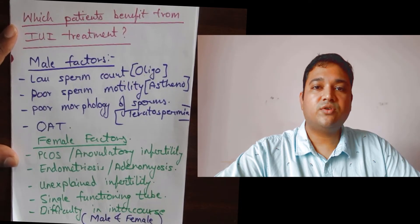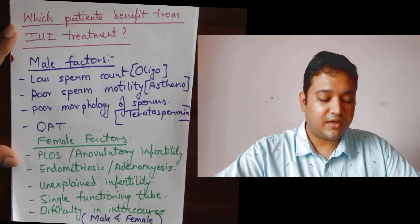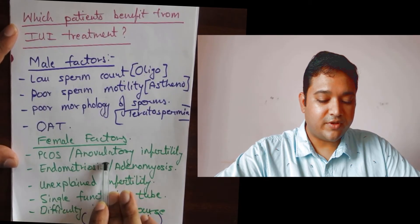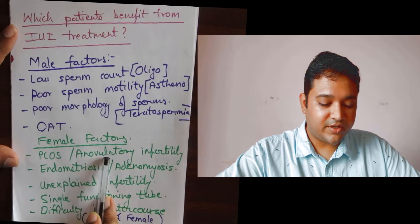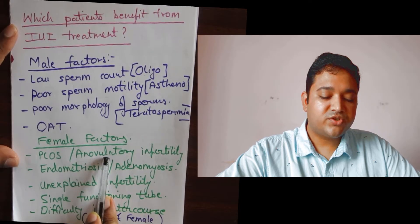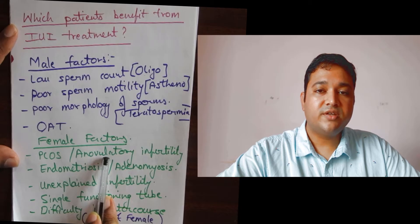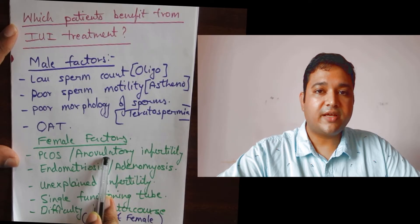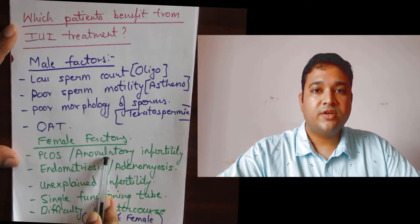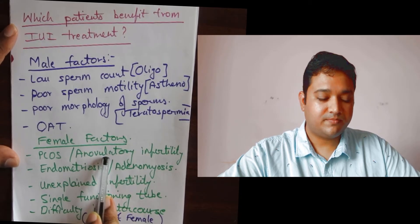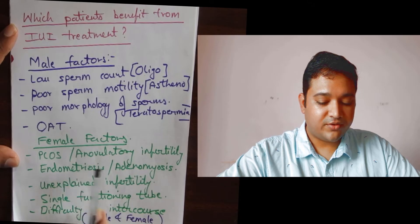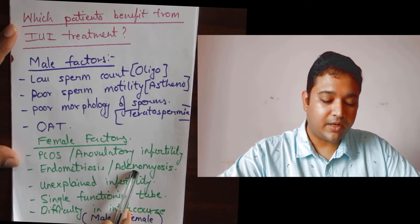IUI may often be used in cases of female infertility. Some of these cases are polycystic ovaries and anovulatory infertility. Often in these cases the problem is that the woman is not able to produce her eggs or follicles in good quantity or quality. These women are often given treatments like ovulation induction and superovulation, and these treatments can often be combined with IUI to yield better results. Female factors like endometriosis and adenomyosis may also benefit from IUI treatment.